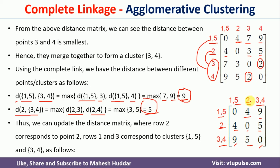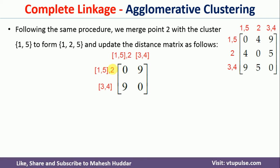In the new matrix, the minimum distance is 4, between cluster {1,5} and point 2. We combine them into cluster {1,5,2}. The only remaining separate cluster is {3,4}. The distance between cluster {1,5,2} and cluster {3,4} is the maximum of d({1,5},{3,4})=9 and d(2,{3,4})=5, which gives 9. This is written in the final matrix.